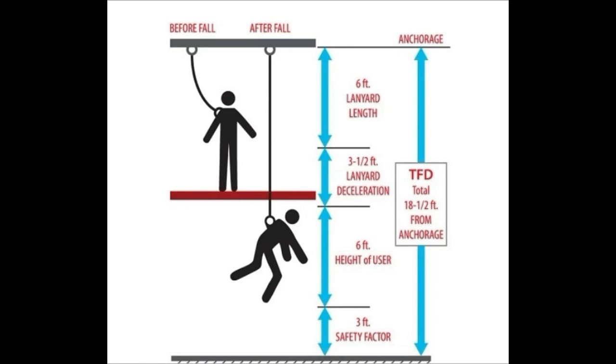To calculate the total fall distance (TFD), you add up the values of all the parameters mentioned above. TFD equals FFD plus DD plus VAI plus HE plus SF.